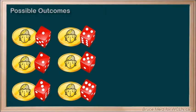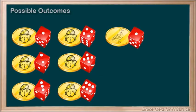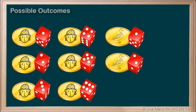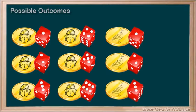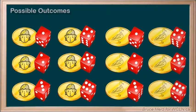I think we're halfway there, because we could also get a tails and a 1, or a tails and a 2, or a tails and a 3, and so on all the way up to 6.